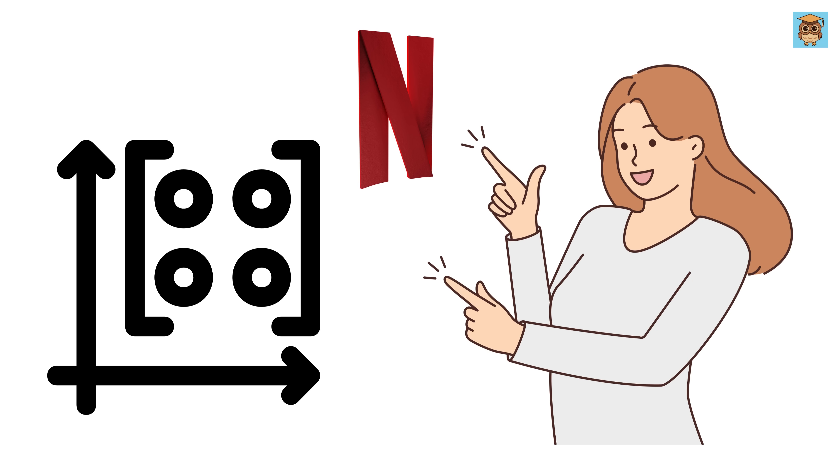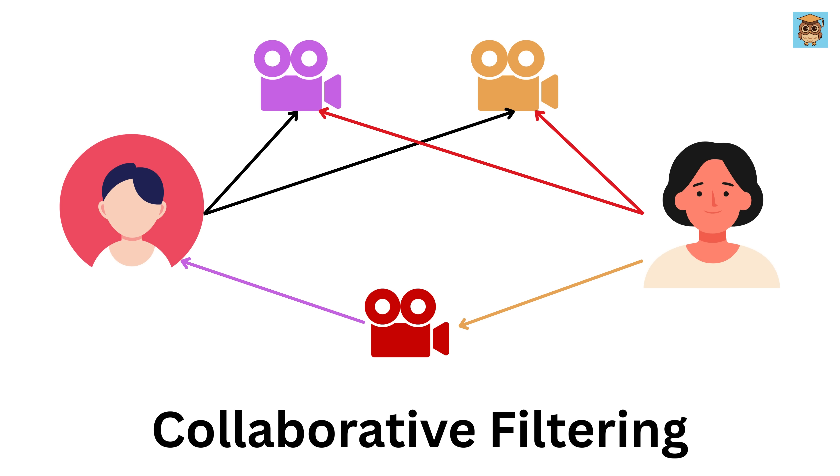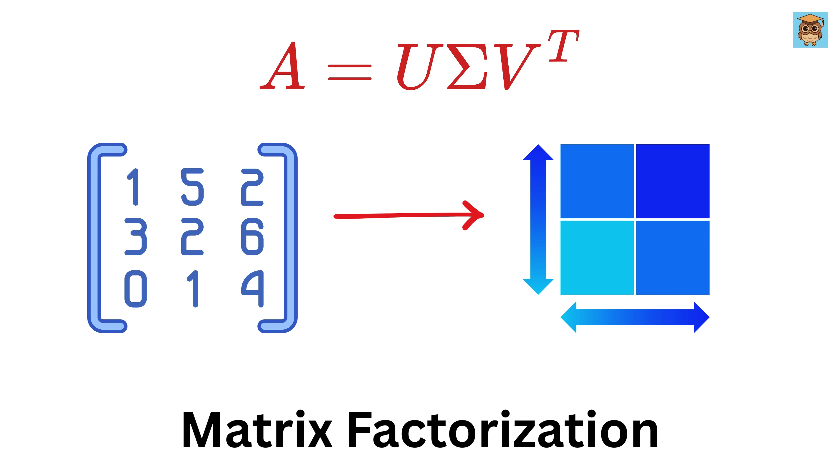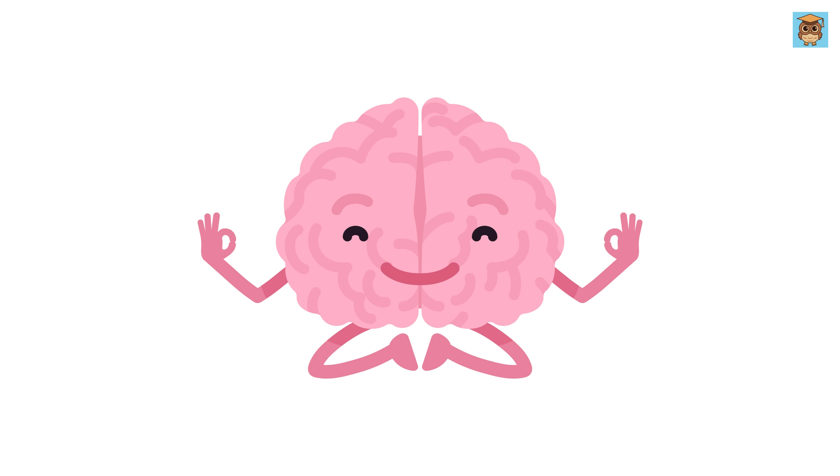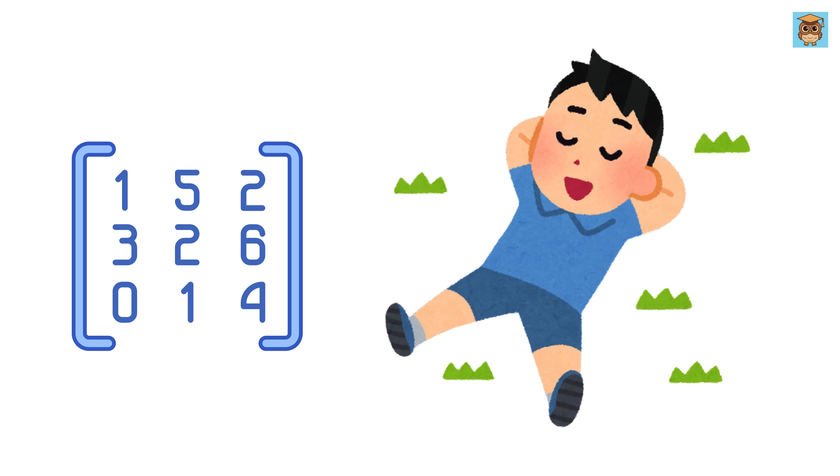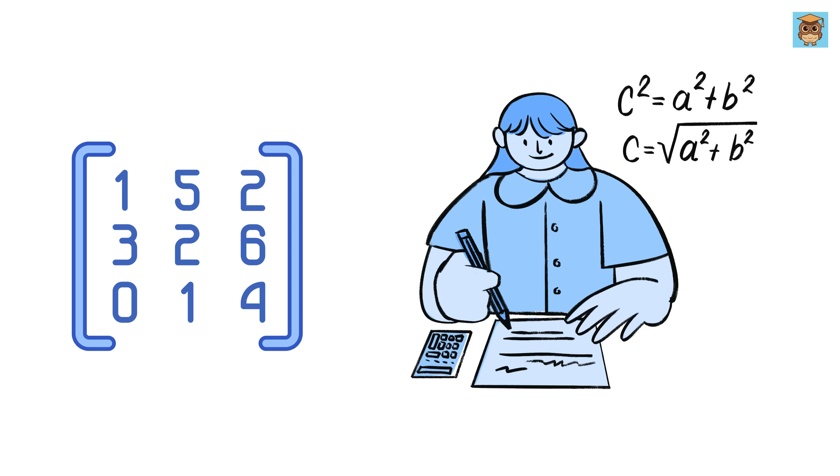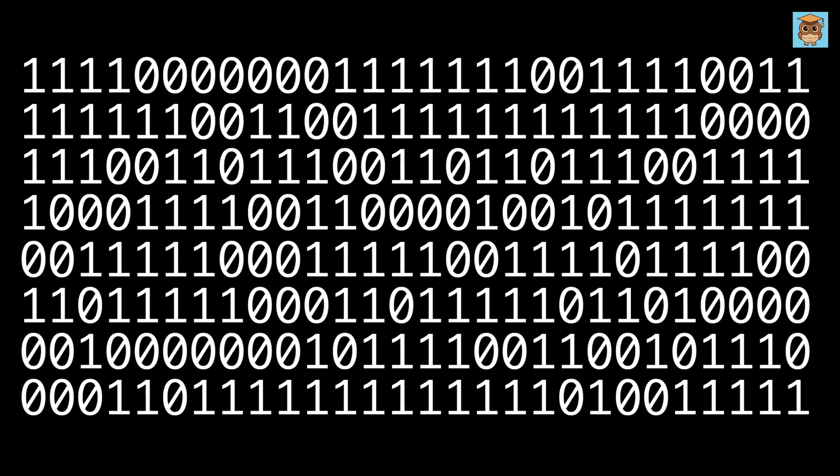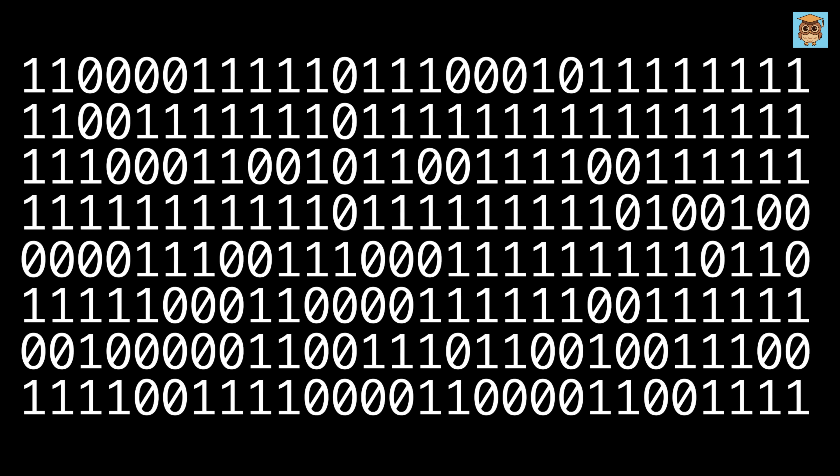Netflix primarily uses a combination of collaborative filtering and matrix factorization techniques, like singular value decomposition, for its recommendation algorithm. But to keep things simple, I'll show you a basic version using just a matrix and a bit of not-so-complicated math, so that you can actually see how it works behind the scenes.